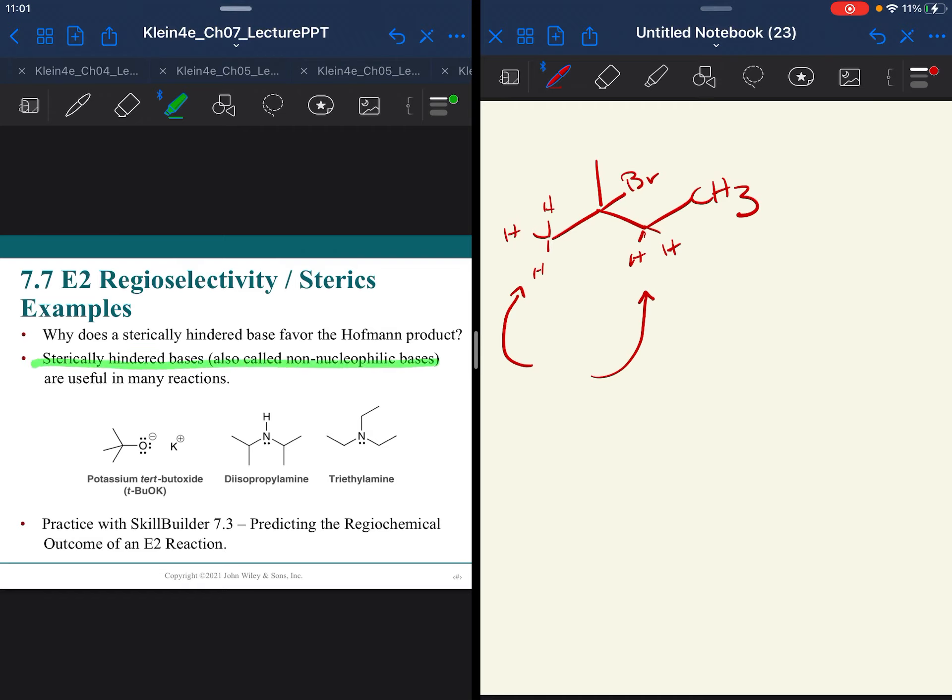But sterically hindered bases are also called non-nucleophilic bases. We'll cover that in a little bit. They are useful in many reactions. This is the one that you are going to see from me, potassium butoxide. In your reading and in some of your practice, you might run across diisopropyl amine or triethylamine, also bulky bases that are useful. Again, this is the one that I will test over.